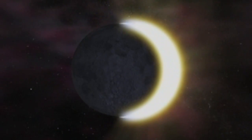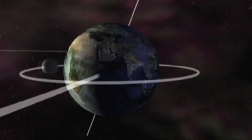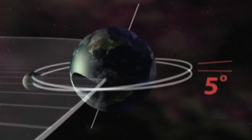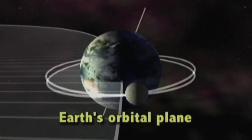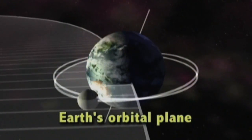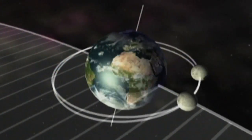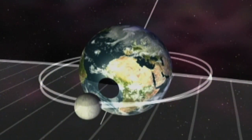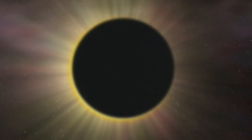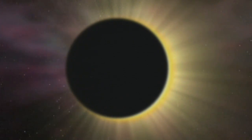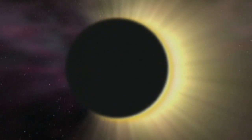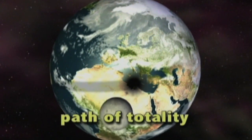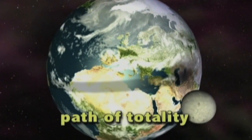However, not all new moons produce a solar eclipse. The moon's orbit around the Earth is tilted about five degrees to the plane of the Earth's orbit around the sun. As a result, the moon spends most of its time either above or below the Earth's orbital plane. The moon passes through the plane only twice during each of its orbits. If the moon also happens to be in a new moon phase when it crosses Earth's orbital plane, then a solar eclipse will occur. Most eclipses are partial because the new moon takes place just before or after the moon crosses the orbital plane. But if the timing is right, a total eclipse of the sun occurs just as the center of the moon passes directly in front of the center of the sun. The path that the moon's shadow makes over the Earth during a total eclipse is called the path of totality. To see a total eclipse, you must be in the path of totality.